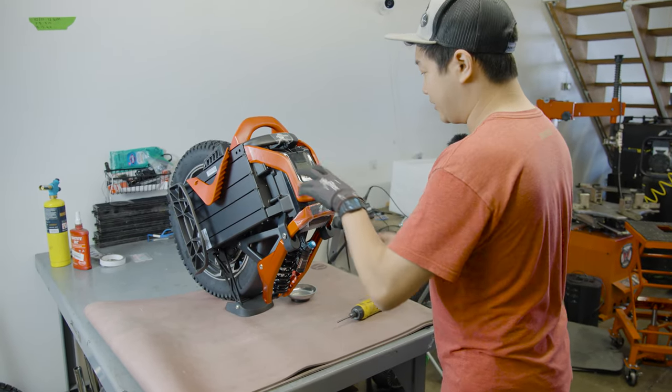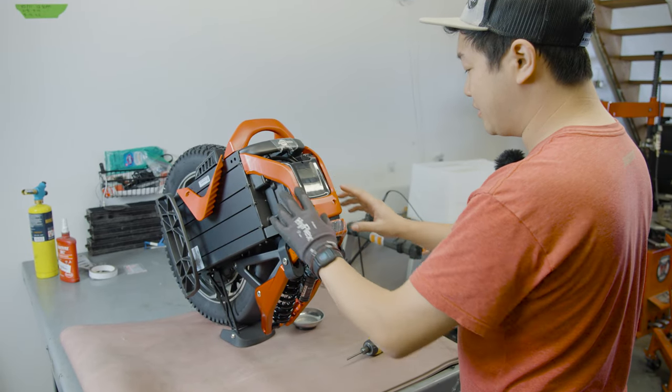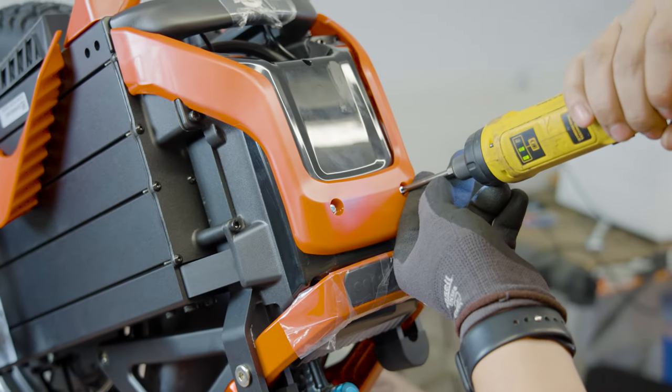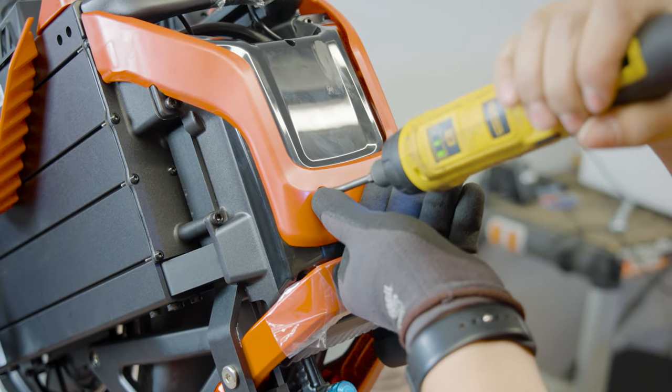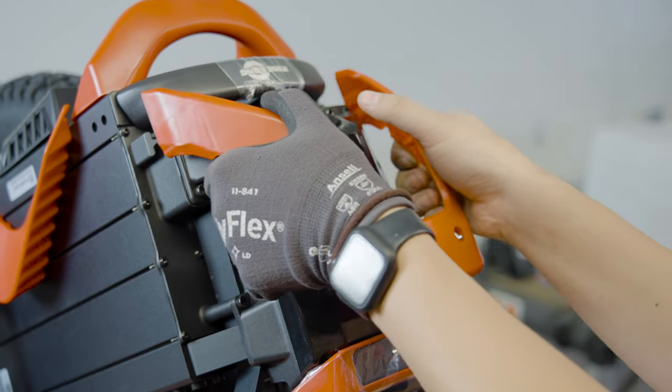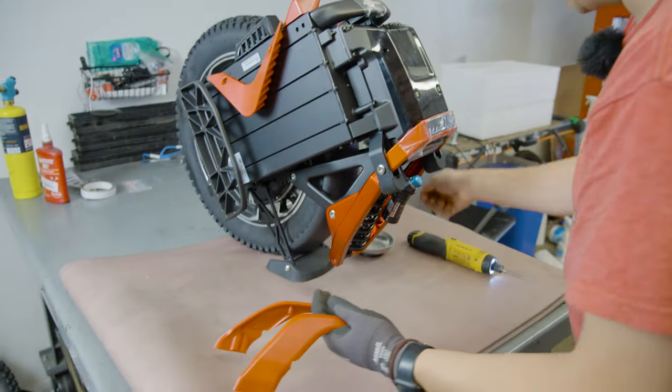So first of all we're gonna take the seat off if you have the seat velcroed here. There's gonna be two Phillips screws. I'm just gonna undo these real quick. This will just slide right off. We'll save these screws.